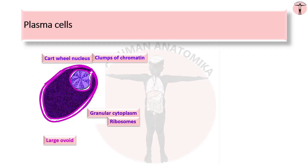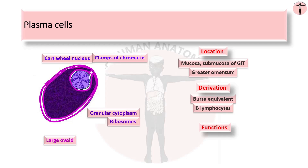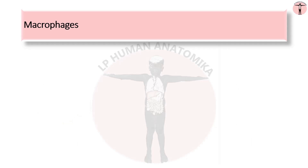The lifespan of plasma cells is 10 to 20 days. They are located numerously in the mucosa and submucosa of the gastrointestinal tract and also in the greater omentum. The cells are derived from B lymphocytes, particularly when exposed to antigens. The functions of plasma cells are to liberate immunoglobulin or humoral antibodies to counteract the action of antigens and help in the defense mechanism of the body.